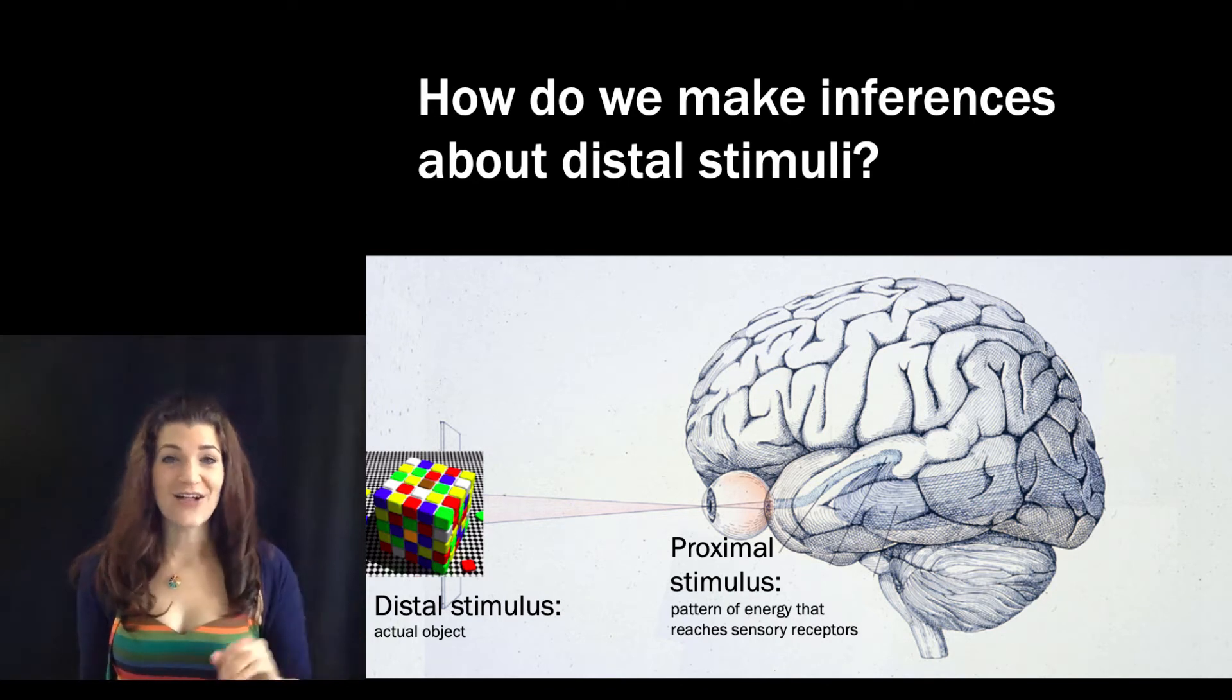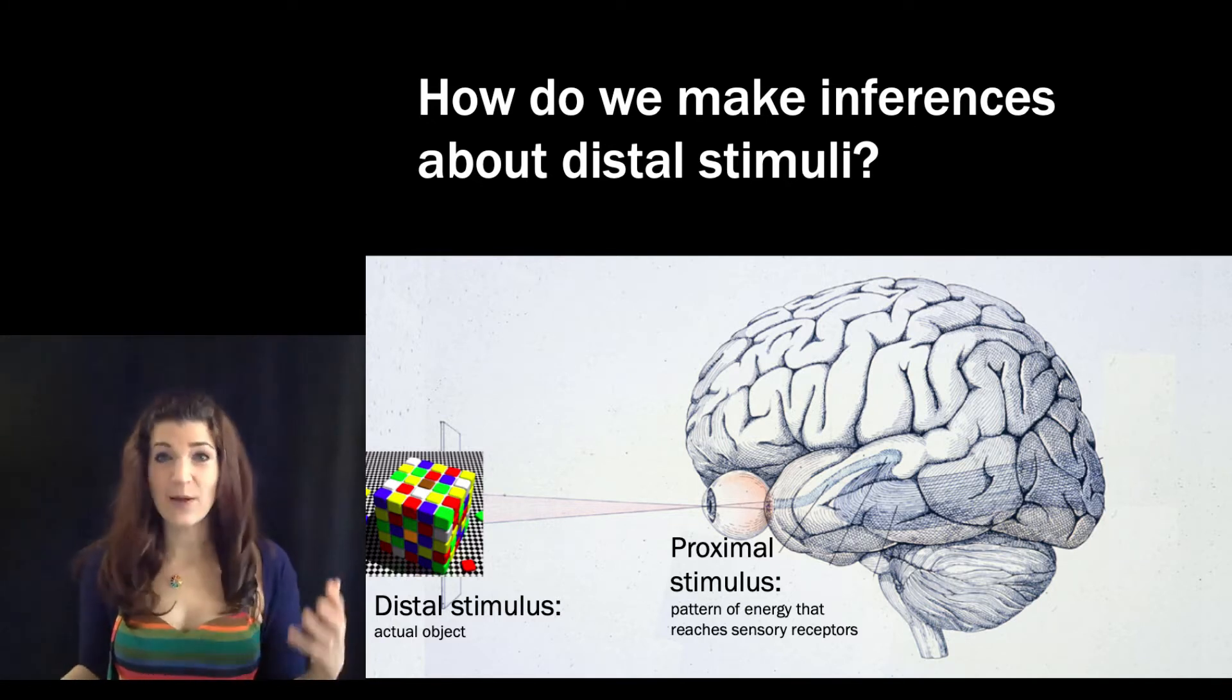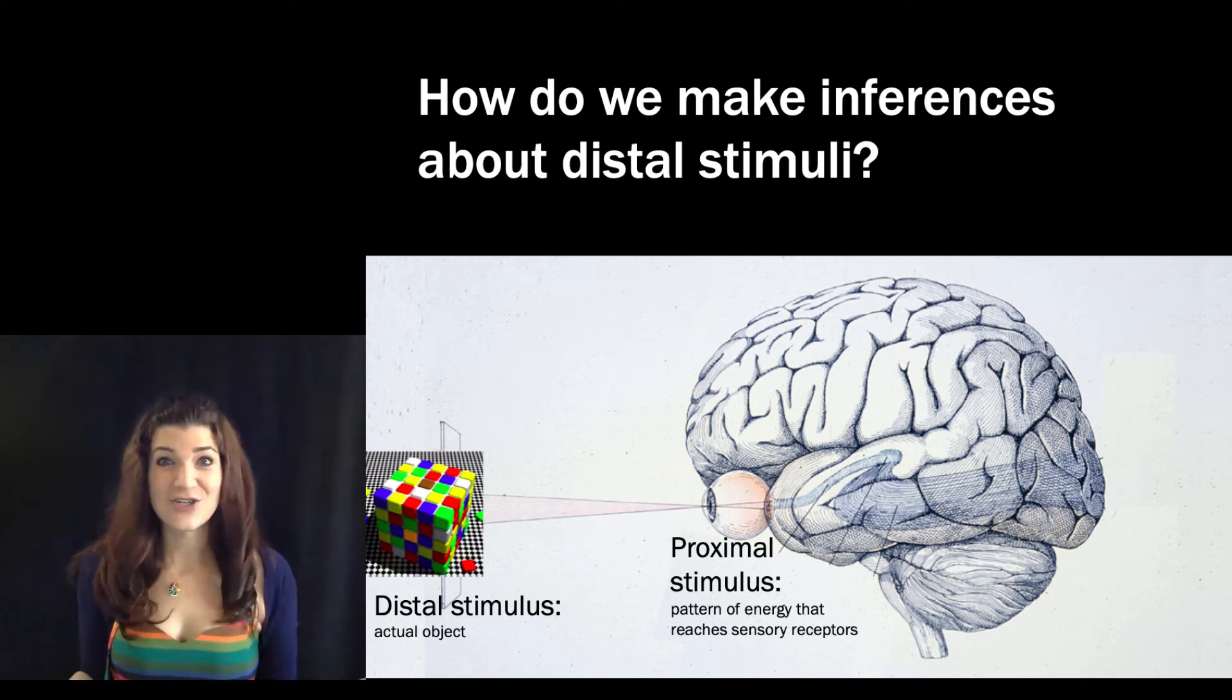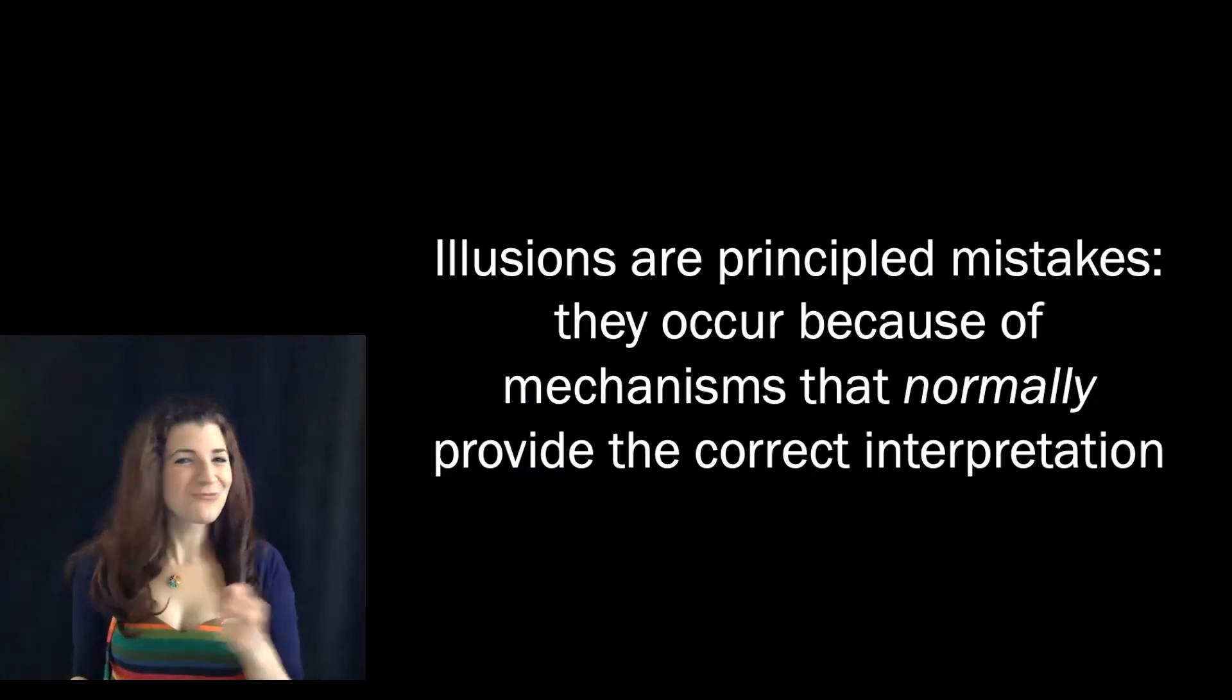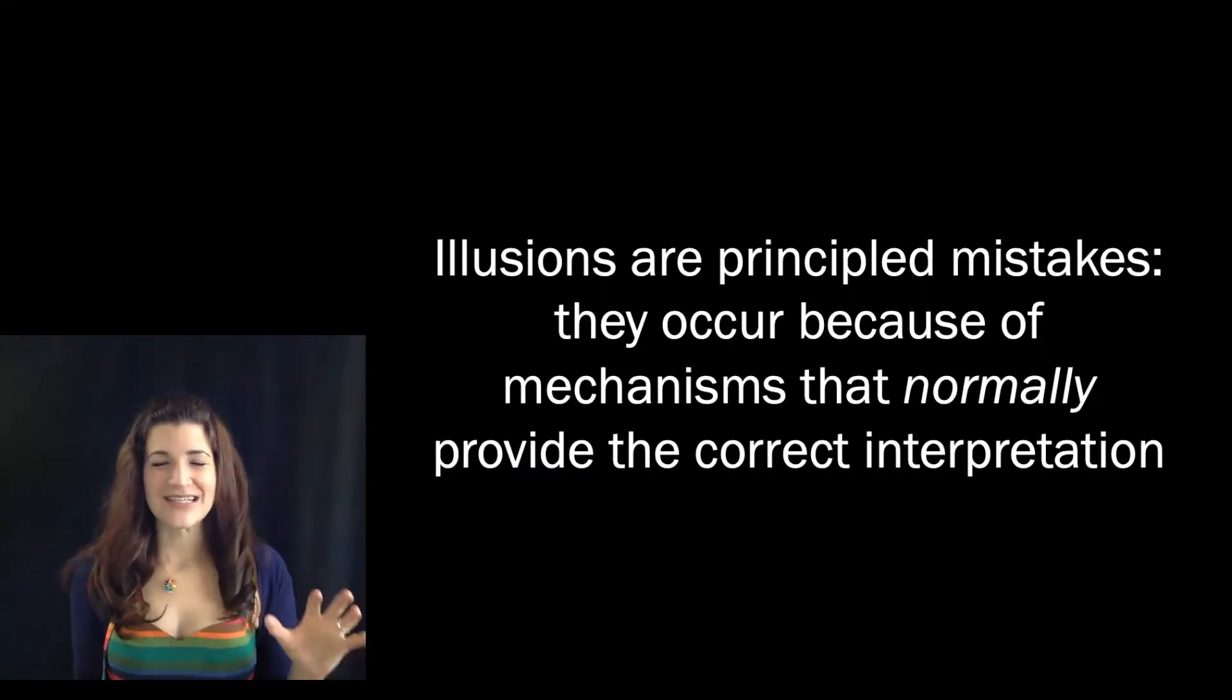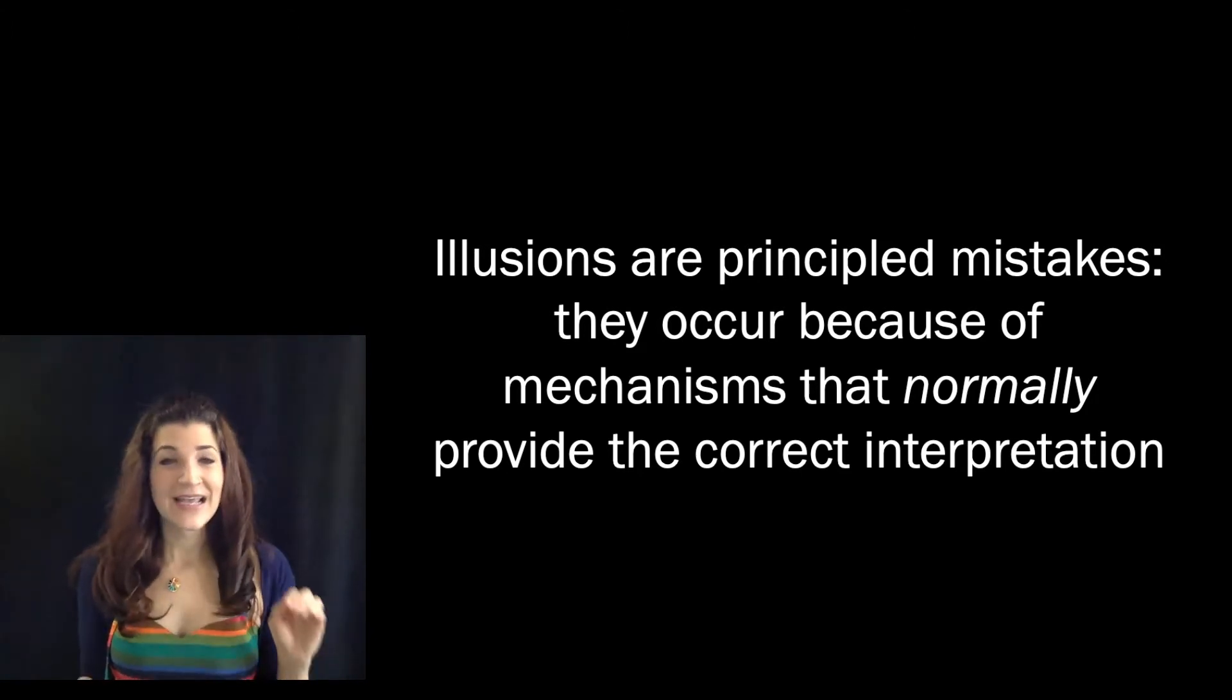So one of the tools that psychologists like to use to discover things about the kinds of inferences we make, about the processes by which we are guessing what's actually out there, is through illusions. Psychologists are really interested in these inferences, and illusions can be useful because they reveal what those inferences are. Given that the inferences are often made outside of conscious awareness, they only are exposed to us through the use of illusions.